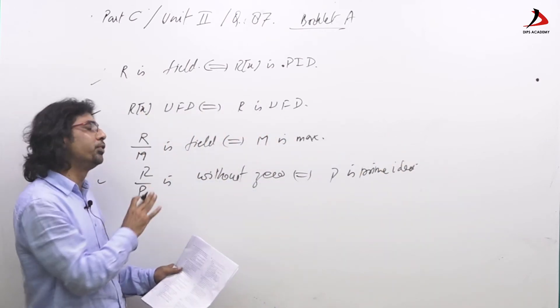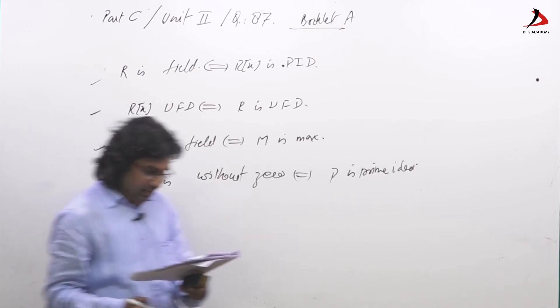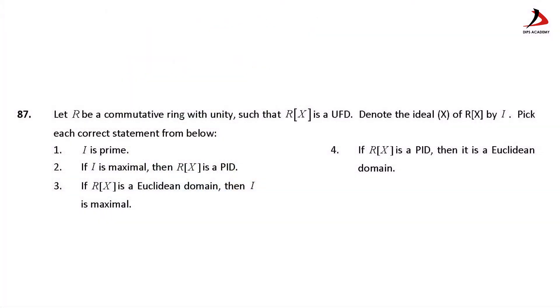If you remember these four results, the question is obvious now. Given this question that R is any commutative ring with unity such that Rx is UFD. Now denote the ideal X generated by X, given this is denoted by I, and then they are asking certain questions.